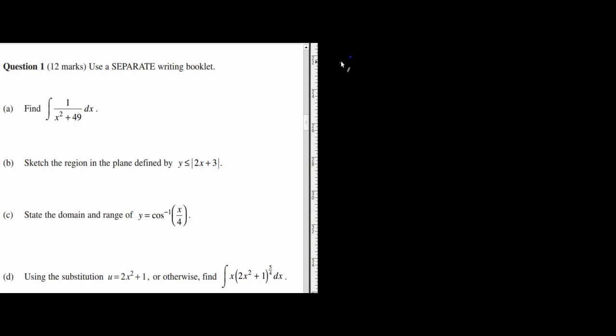It's asking for the range and domain of y equals cos inverse of x on 4. Now remember, with cos inverse, the thing inside the brackets had to be between minus 1 and 1. Any instance, as soon as you see a cos inverse, what is inside has to be between minus 1 and 1. So write this out straight away. And therefore, in this case, our x is going to be between minus 4 and 4.